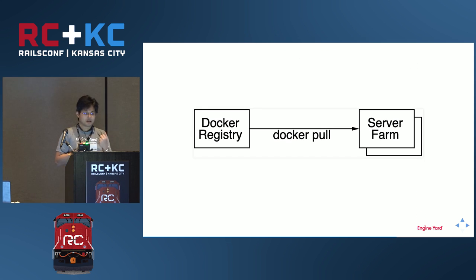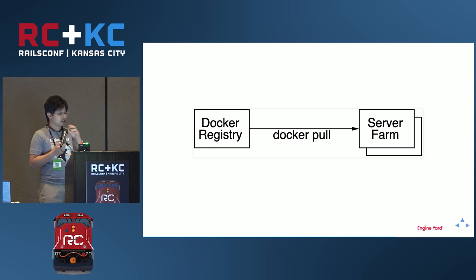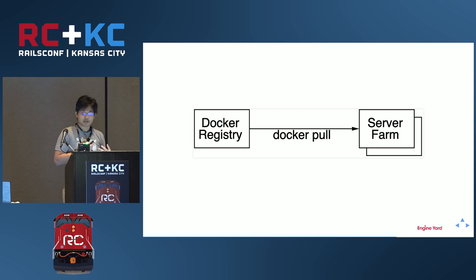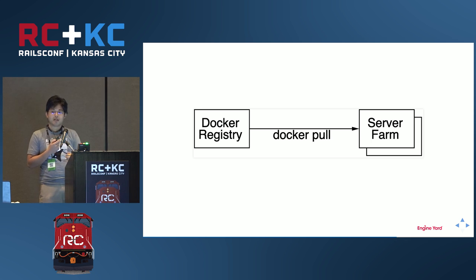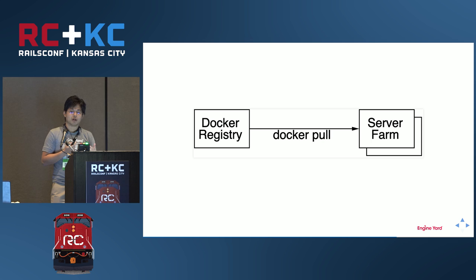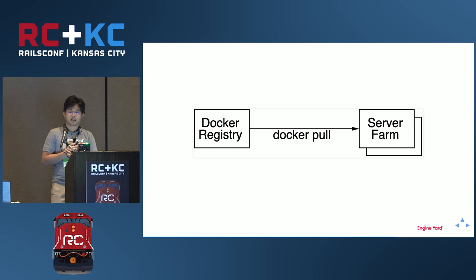Contrast that with deploying Docker images. Docker has a command called docker pull, which basically downloads the image from the Docker repository. So the deployment workflow is just download the image and run it — simplifying your deployment process. If you have a canary deploy, you can do that as well. You're now bound by how fast you can download your images from your Docker registry like Docker Hub, and not from other sources like RubyGems.